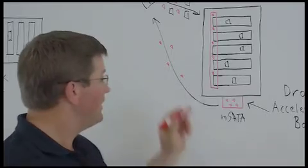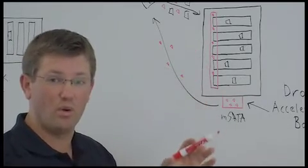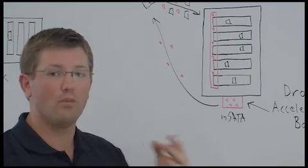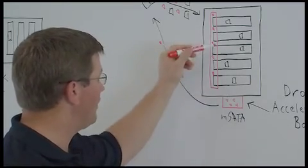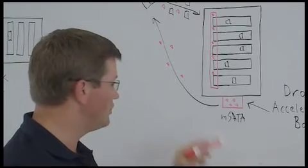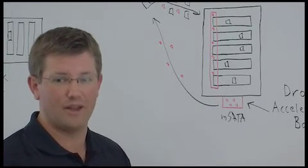Now over time, the type of data that remains hot or cold or frequently accessed may change. Drobo trends the read patterns over time and will migrate data in and out of the mSATA device to ensure that the data you really need access to all the time is available there.